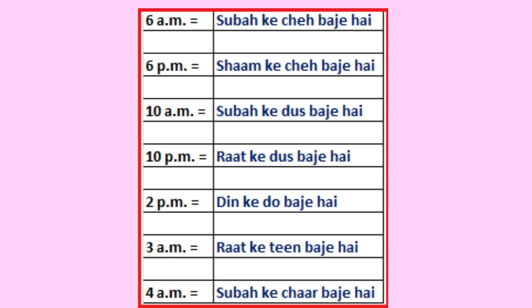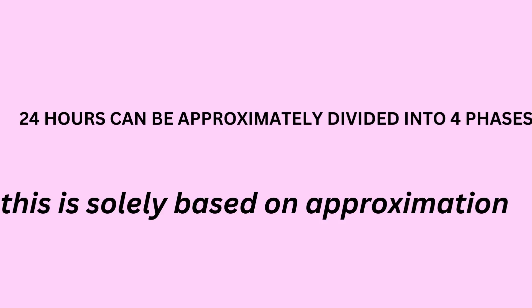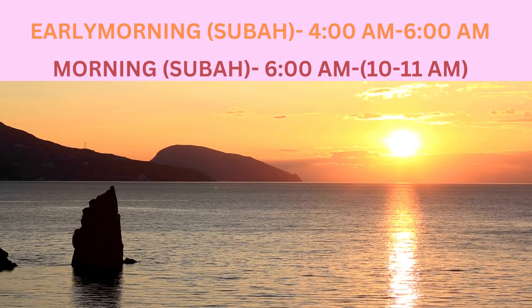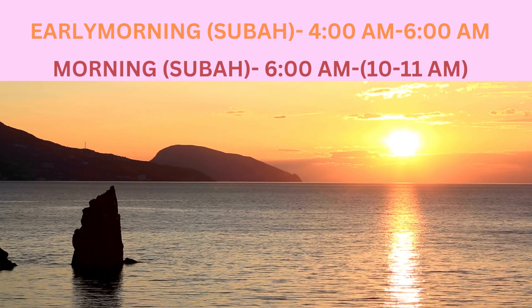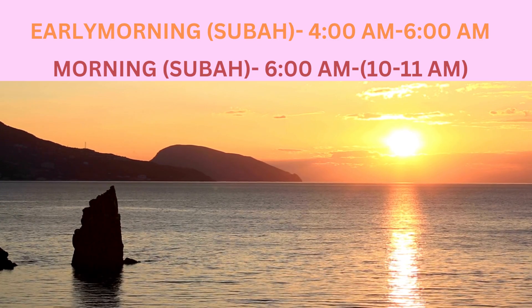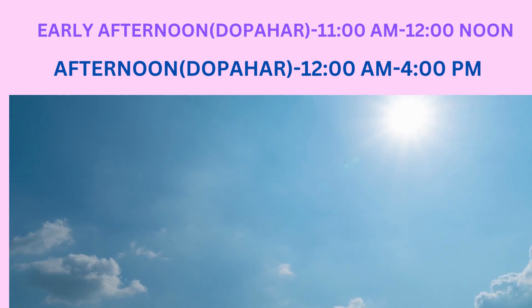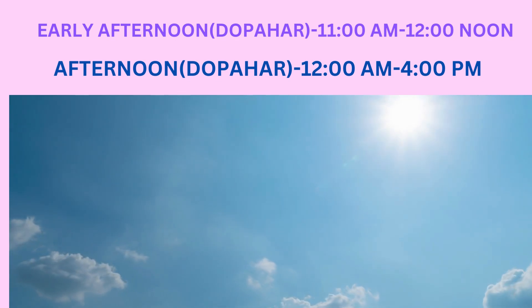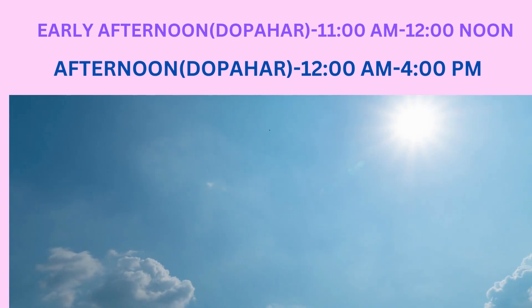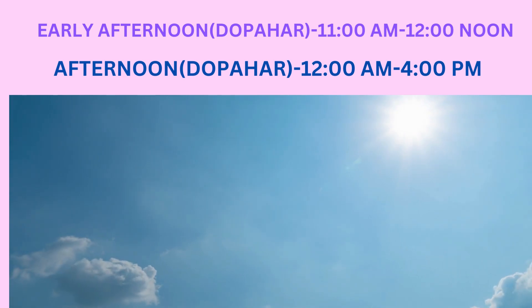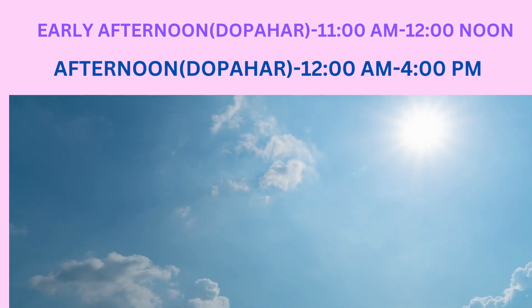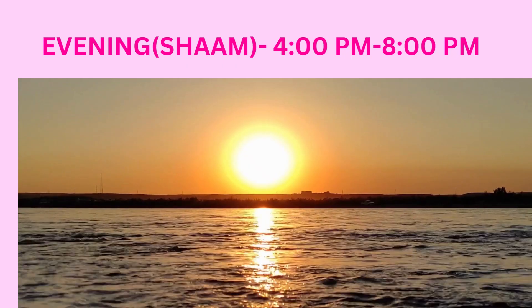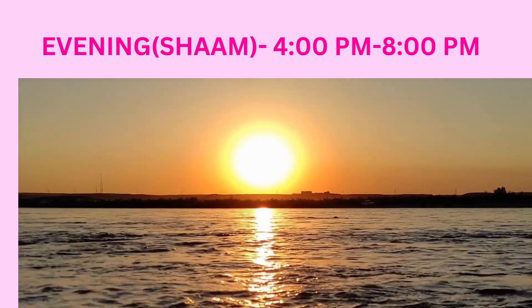3 AM is raat ke 3 baje hain. 4 AM is subah ke 4 baje hain. As an approximation: morning (subah) is generally from 4 AM until around 10:30 AM. From 11 AM to 3:59 PM is afternoon — dopahar. Evening (shaam) generally starts around 4 PM up until 8 PM. And night (raat) starts around 9 PM up until 3:59 AM, because 4 AM is known as Brahma Muhurat — the time when people who do yoga and meditation generally wake up.